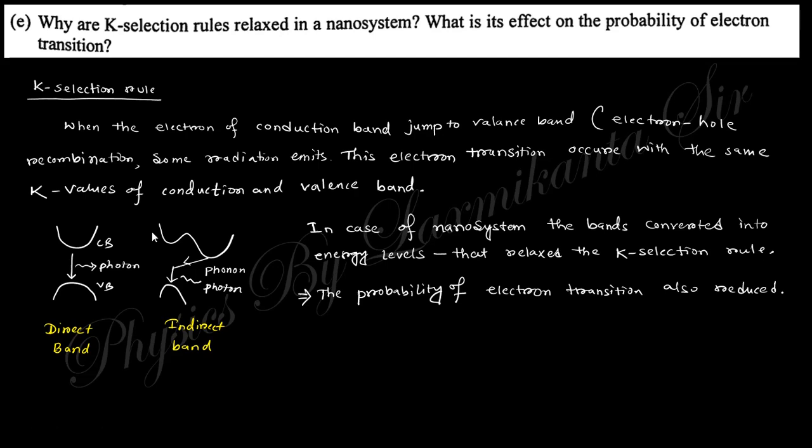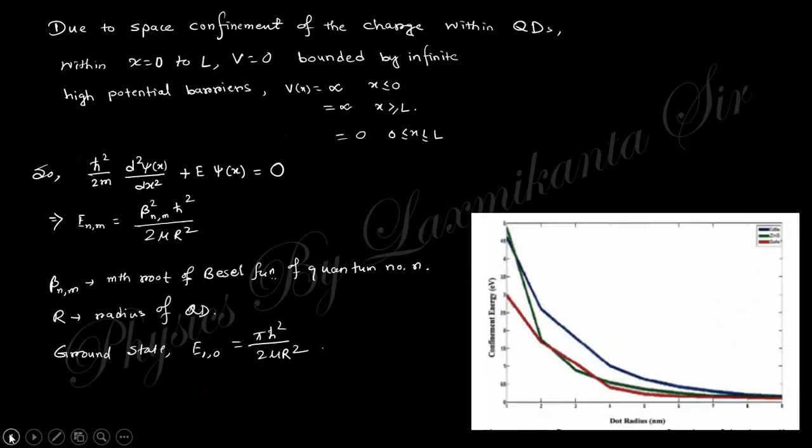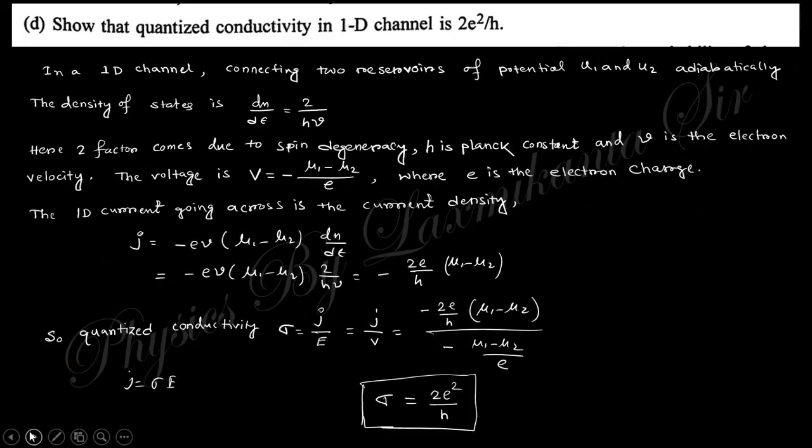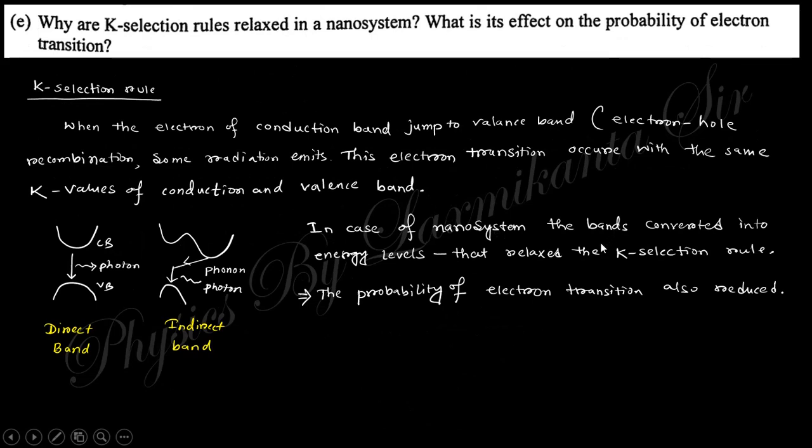The final transition will be at same k value - this is k selection. But in case of nano systems, this k selection is relaxed because these conduction bands are converted into levels, like in the first question we saw that bands are converted into levels. That's why this selection is relaxed and the probability of the electron transition also reduced in case of nano-sized material. Because the band gap increased, the transition probability also reduced, the probability of electron transition reduced because of increasing band gap.